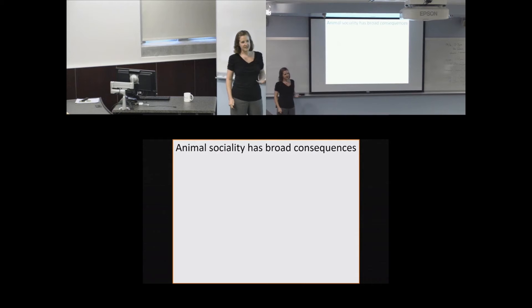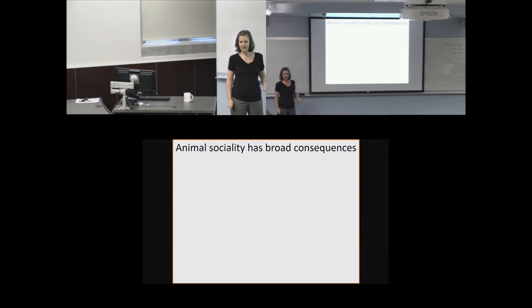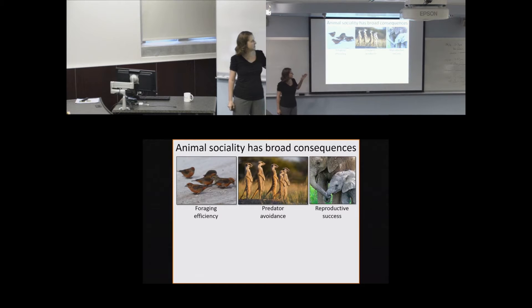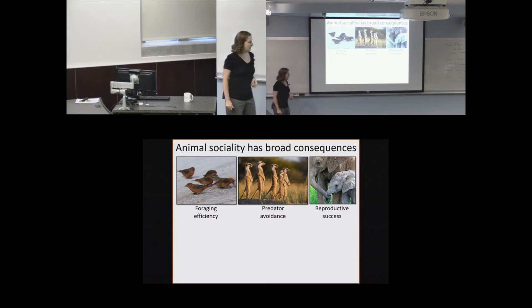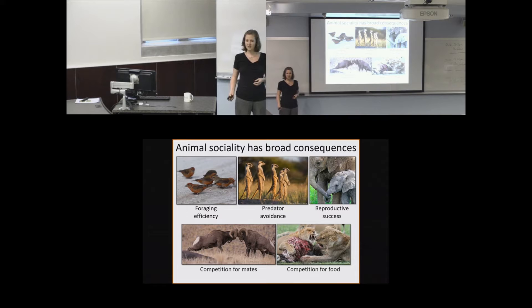In a very broad sense, sociality has broad consequences for individuals within social groups. Individuals that associate with conspecifics can benefit through things like increased foraging efficiency, predator avoidance, or reproductive success. But when you bring individuals of the same species together, that also makes individuals compete for similar resources, so competition for mates and food can also be important and can cause a cost to these social associations.